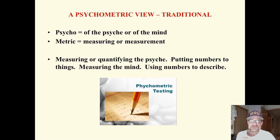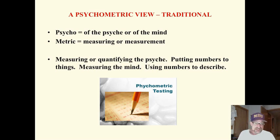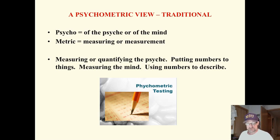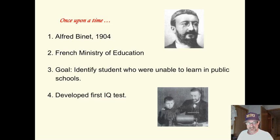The psychometric view — that's the view we are going to look at first of all. Psycho means of the mind or of the psyche; metric means you are measuring. So psychometric is measuring or quantifying the psyche or some aspect of the mind — putting numbers to things, measuring the mind, using numbers to describe a cognitive capacity.